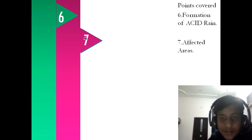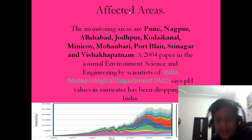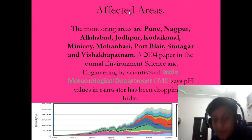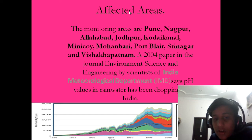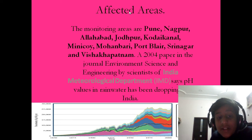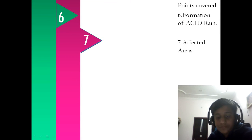Affected areas: The monitoring areas are Pune, Nagpur, Allahabad, Jodhpur, Kodai Canal, Minikai, Mohanbadi, Port Blair, Srinagar and Vishakhapatnam. A 2004 paper in the journal Environment Science and Engineering by scientists of the India Meteorological Department, also called IMD, says pH values in rainwater have been dropping in India.